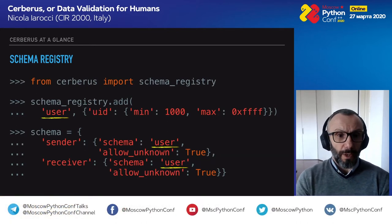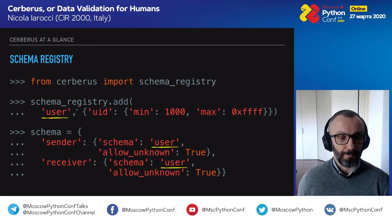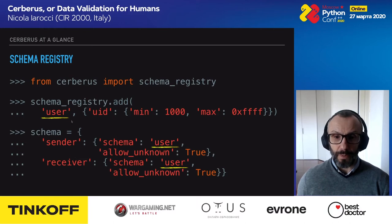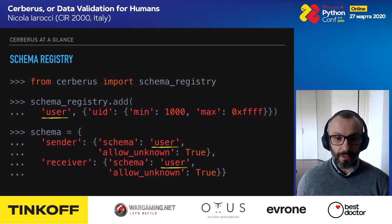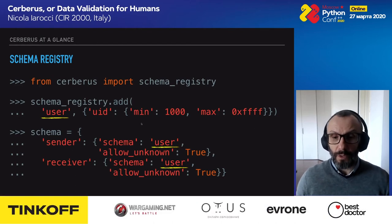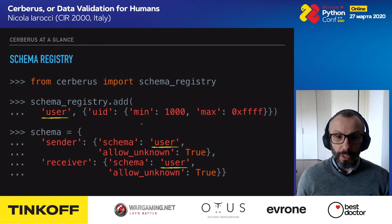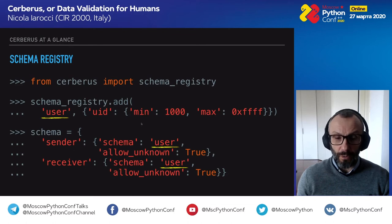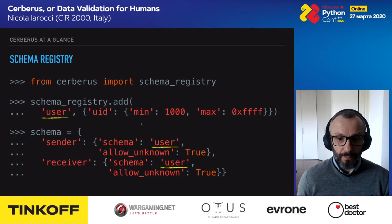A schema registry is a registry where you can store and reuse schemas. You define a registry with a key like 'user' and store the schema there. When defining a new schema, you can reference 'user' and reuse it. This is very useful when your validation rule set starts to grow and designing rules becomes cumbersome. Storing schemas in the registry and referencing them makes your schema definitions more readable and manageable.